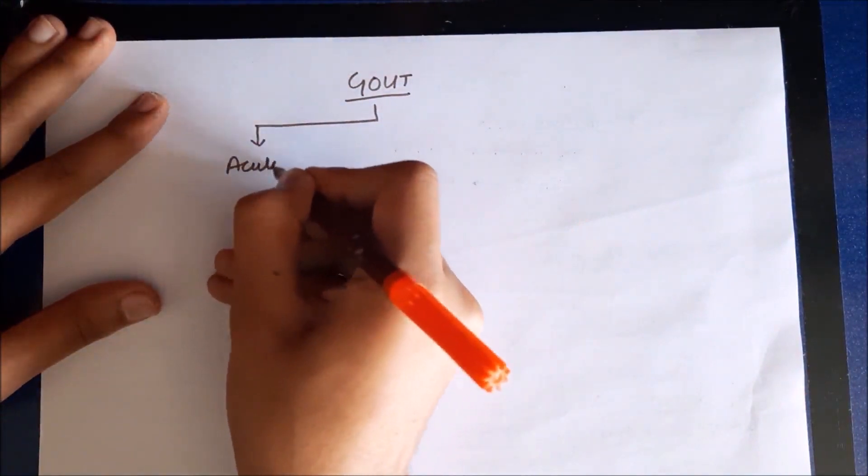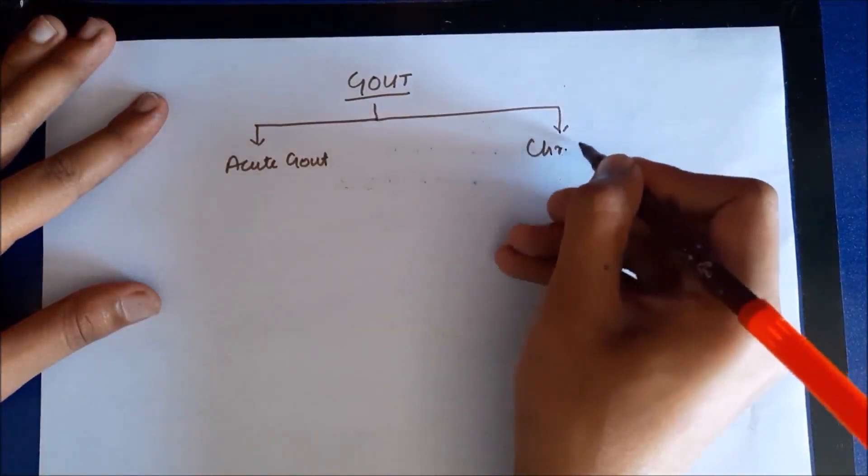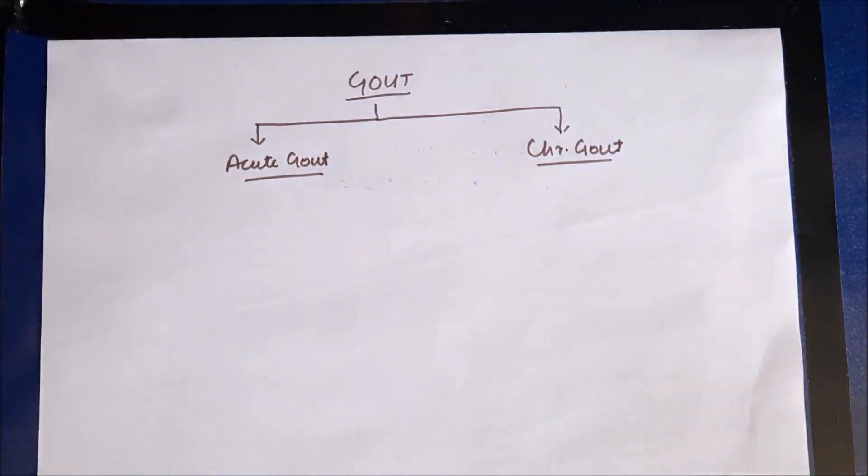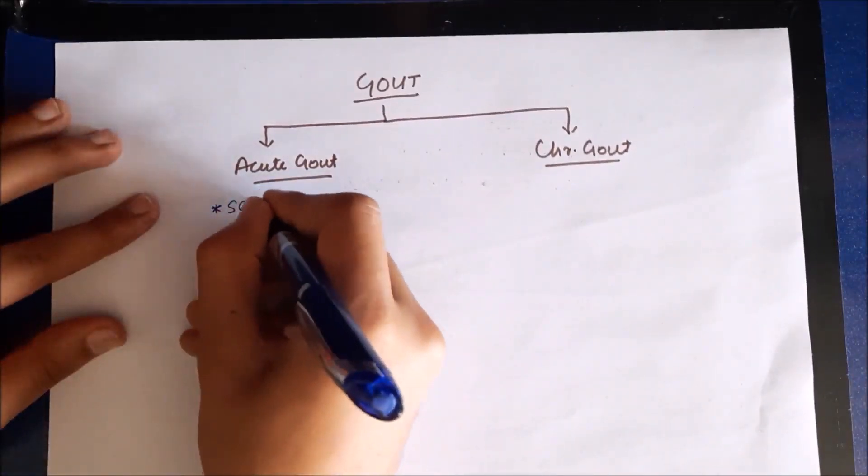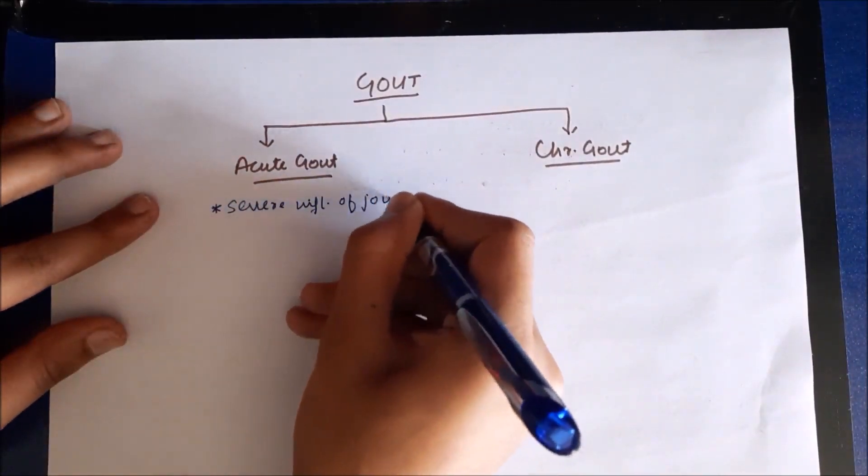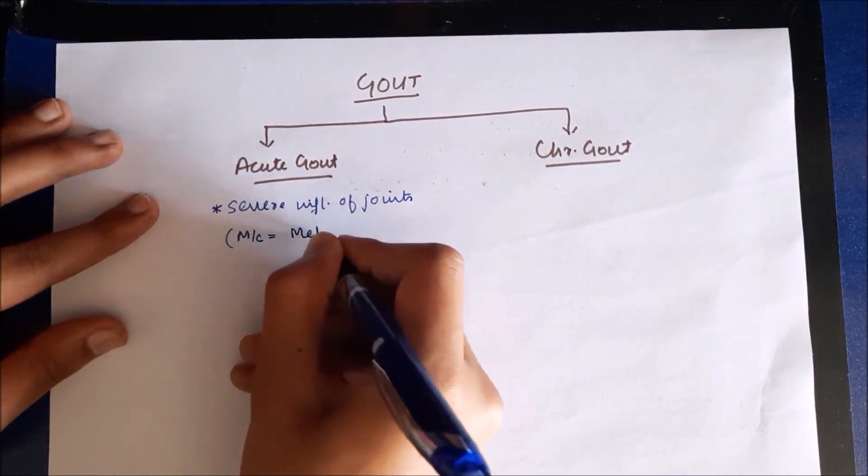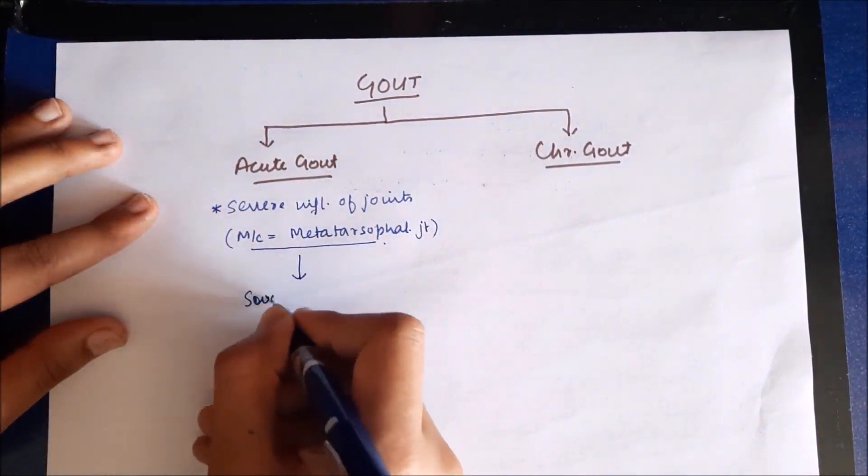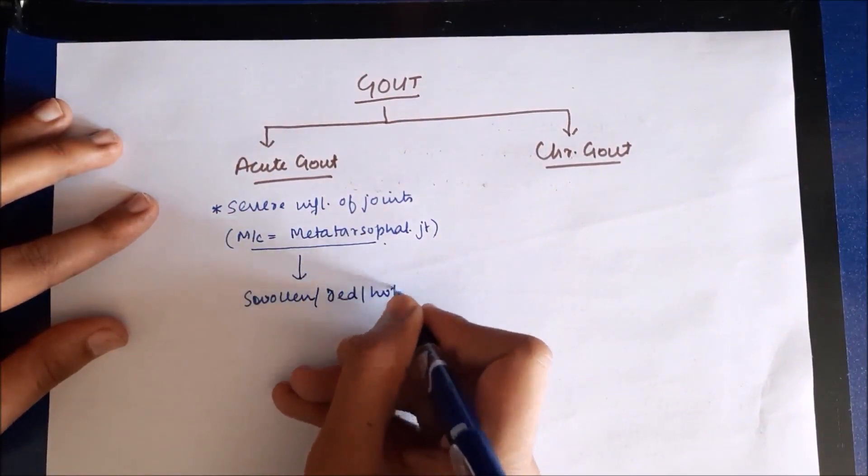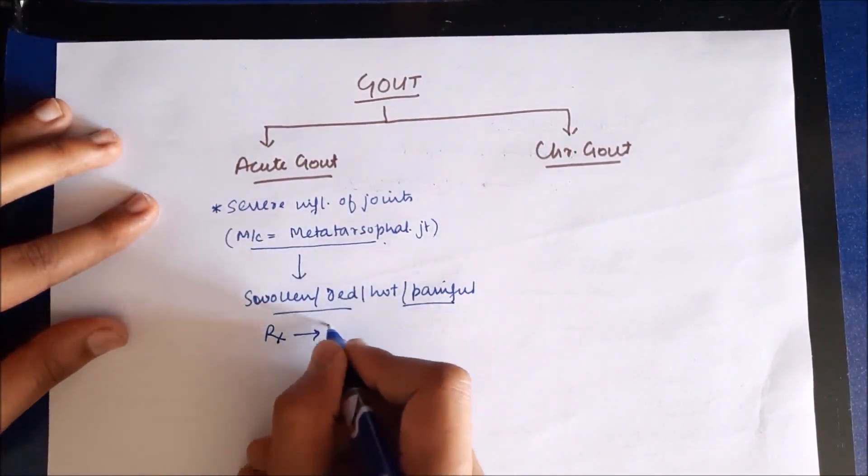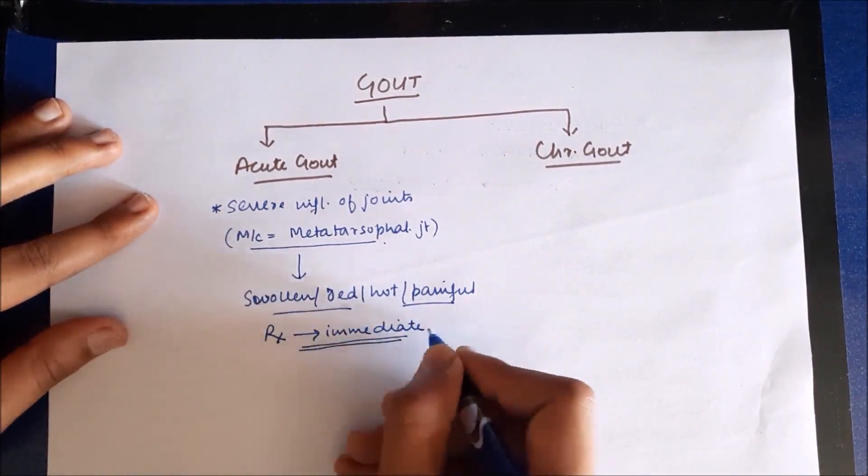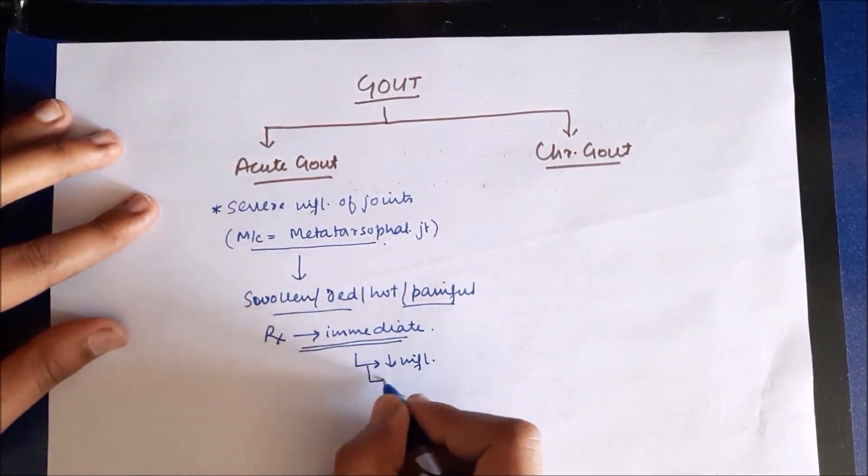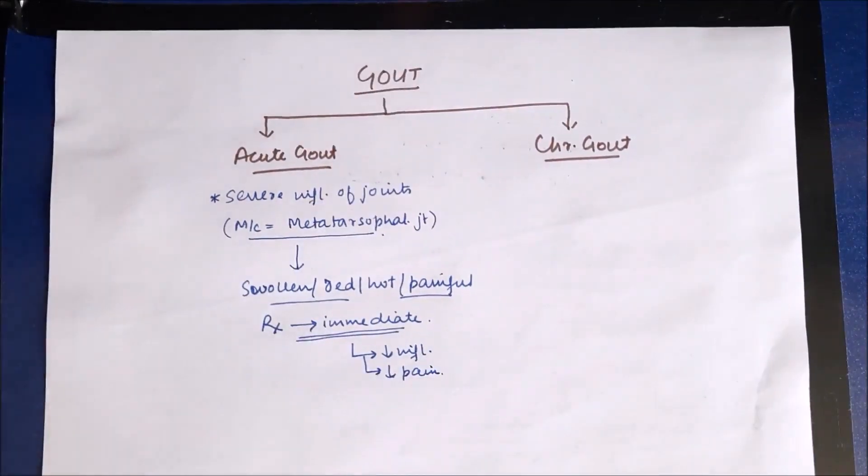Now gout can be divided into two types: acute gout and chronic gout. Acute gout is characterized by severe inflammation of small joints of body, most common being metatarsophalangeal joint, especially first metatarsophalangeal joint. It results in swollen, red, hot, and extremely painful joint, and the treatment for this condition should be immediate. The aim of treatment is to decrease inflammation and decrease the pain.